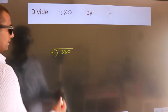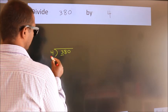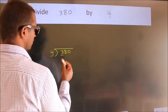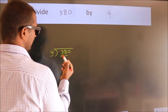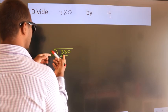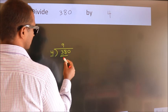Next, here we have 3, here 4. 3 is smaller than 4, so we should take two numbers, 38. A number close to 38 in the 4 table is 4 times 9 equals 36.